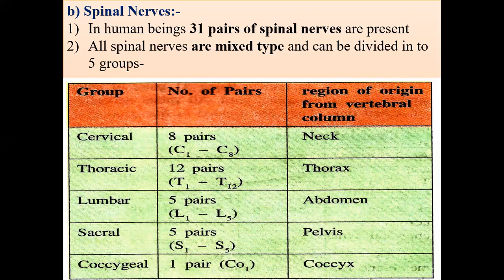We have already studied the histological structure of the spinal cord, where we explained the dorsal horn and ventral horn. The dorsal horn gives rise to the dorsal root, and the ventral horn gives rise to the ventral root. Outside the vertebral column, they join together. The dorsal root is sensory and the ventral root is motor. When they join outside the spinal cord, they form spinal nerves, so all spinal nerves are of mixed type.